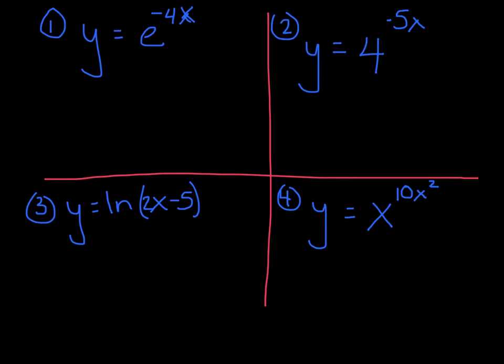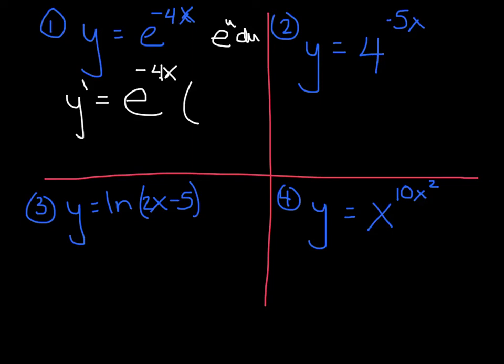Our last four examples - please don't cheat yourself, take the time to go through these. I want to break down the difference between these four. Number one: y equals e to the negative 4x. When I read this, it's exponential, so in my head I'm saying e to the u du - hopefully that pops in your head right away. When I see an e to a power: e to the u du. So y prime equals e to the negative 4x, leave it alone, times the derivative of the exponent, times negative 4 - so negative 4 e to the negative 4x. That's the e to the u du rule.